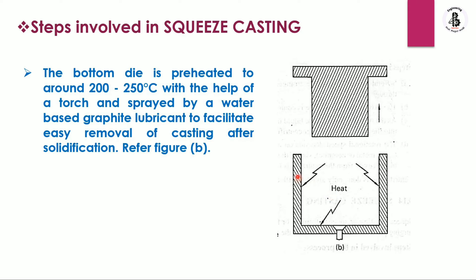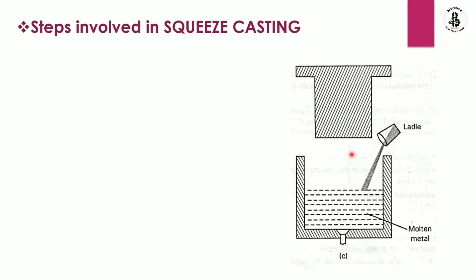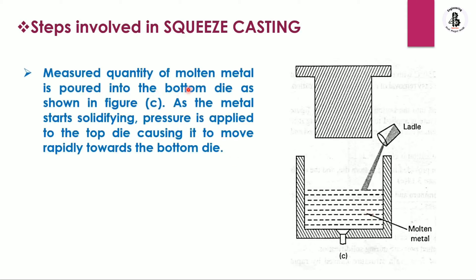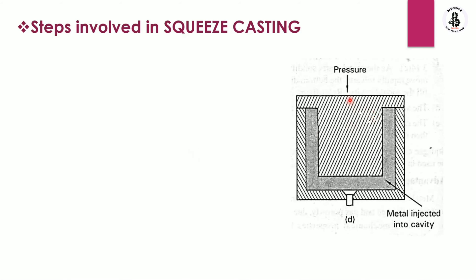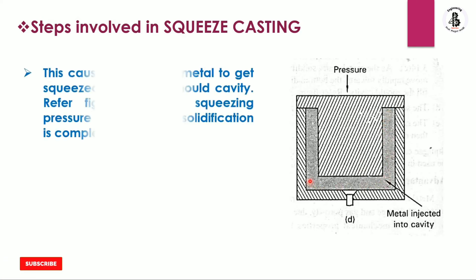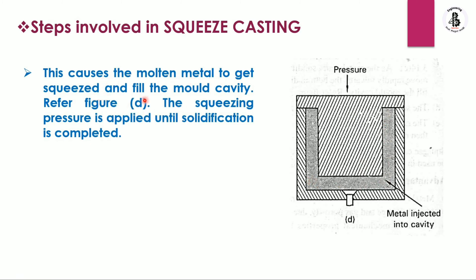This preheating is essential in some applications for easy removal of components. In the third step, a measured quantity of molten metal is poured into the bottom die using a ladle. As the metal starts solidifying, pressure is applied to the top die causing it to move rapidly towards the bottom die. The top die generates pressure and the metal solidifies into that particular cavity.